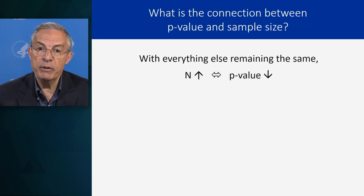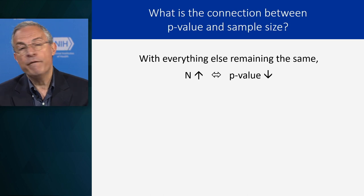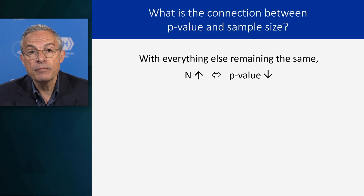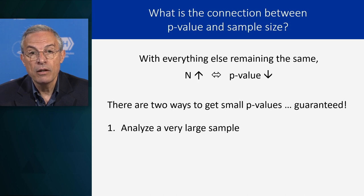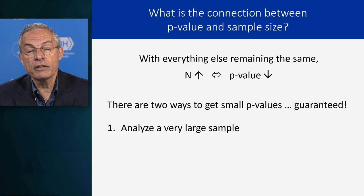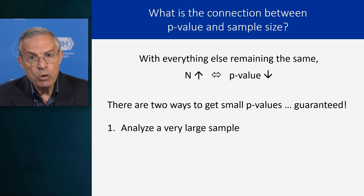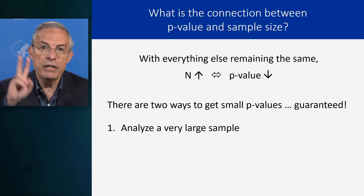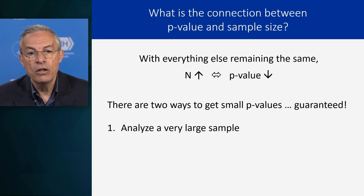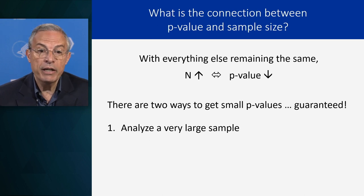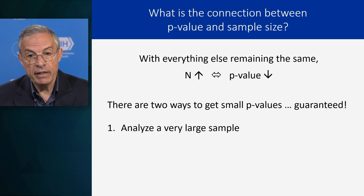What is the connection between p-value and sample size? If you keep everything the same but increase the sample size, the p-value will go down. There are two ways to get small p-values — guaranteed. First: just increase your sample size. Analyze a very large sample and you'll get a small p-value, guaranteed. I'll tell you the second way later.